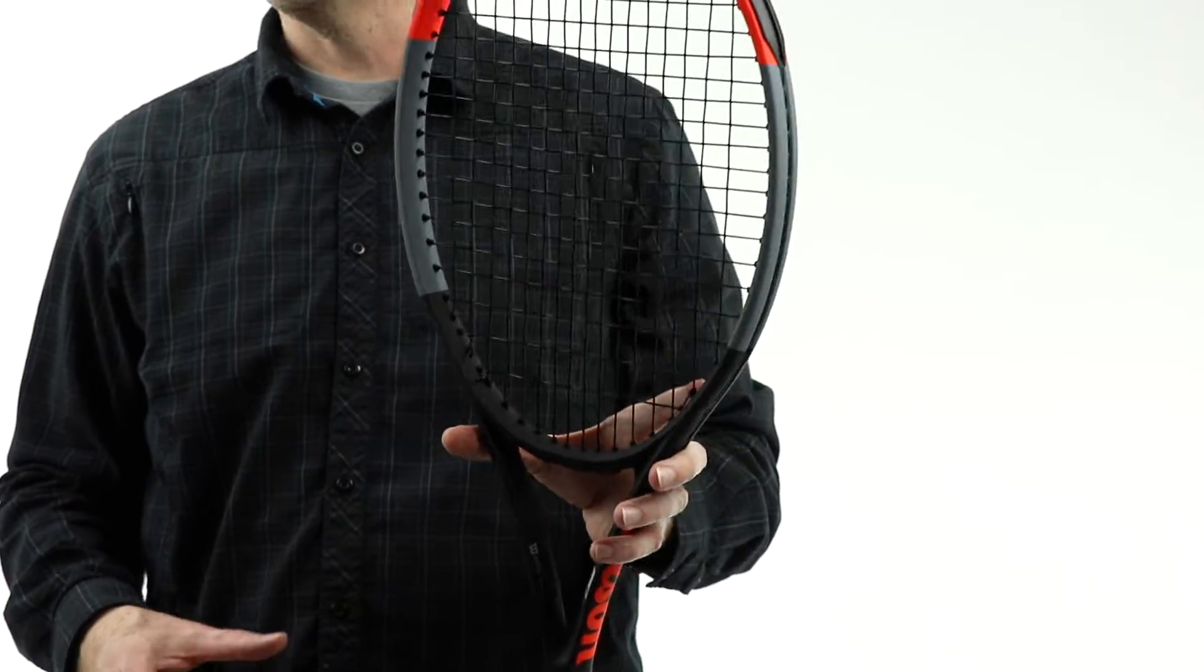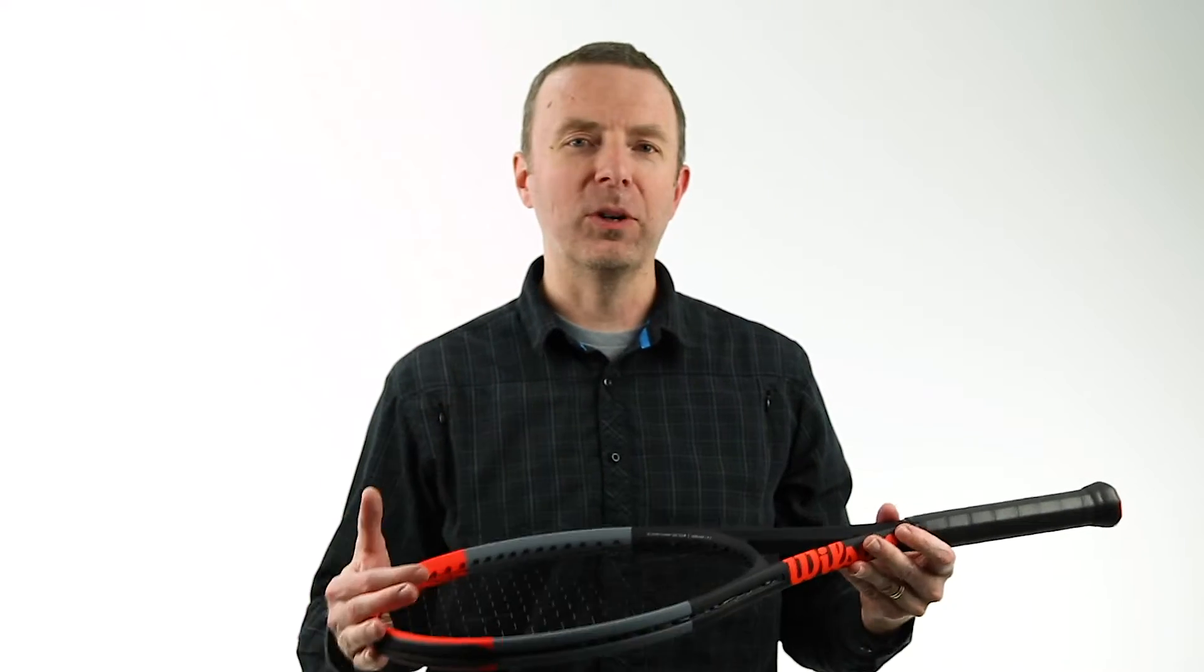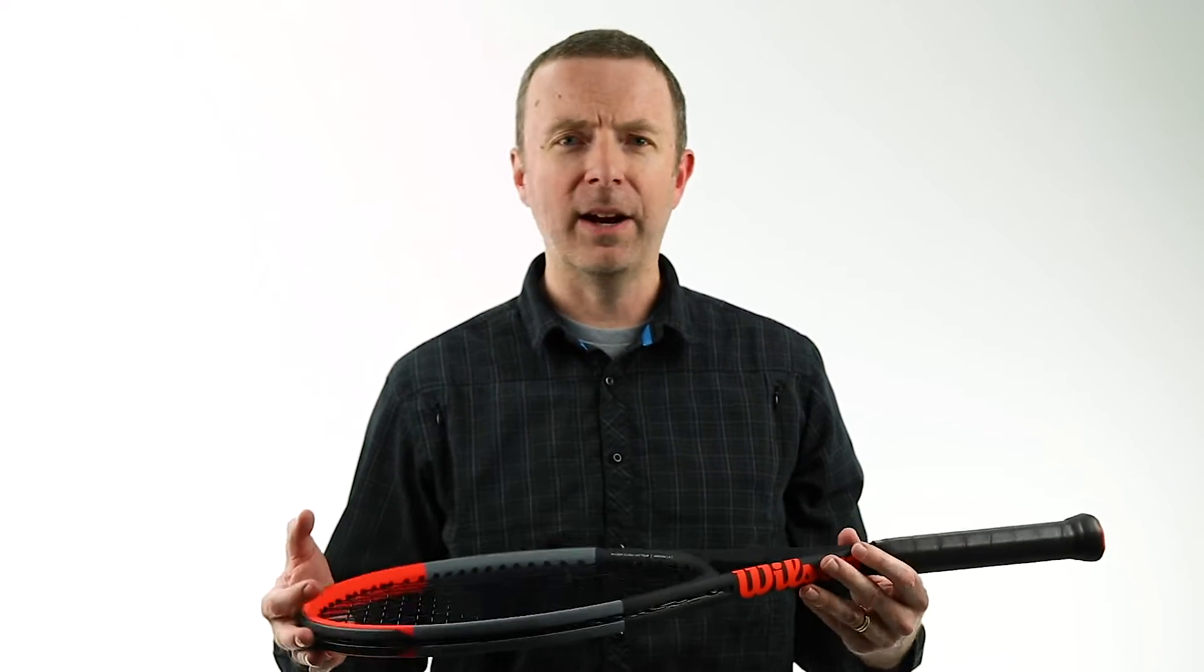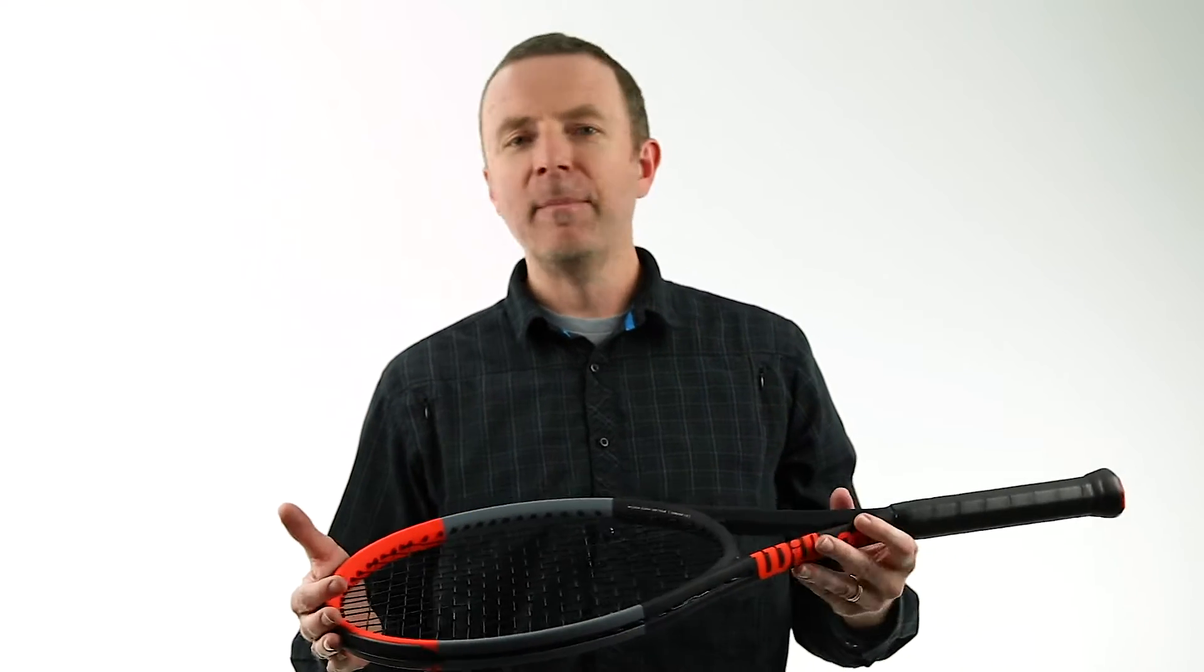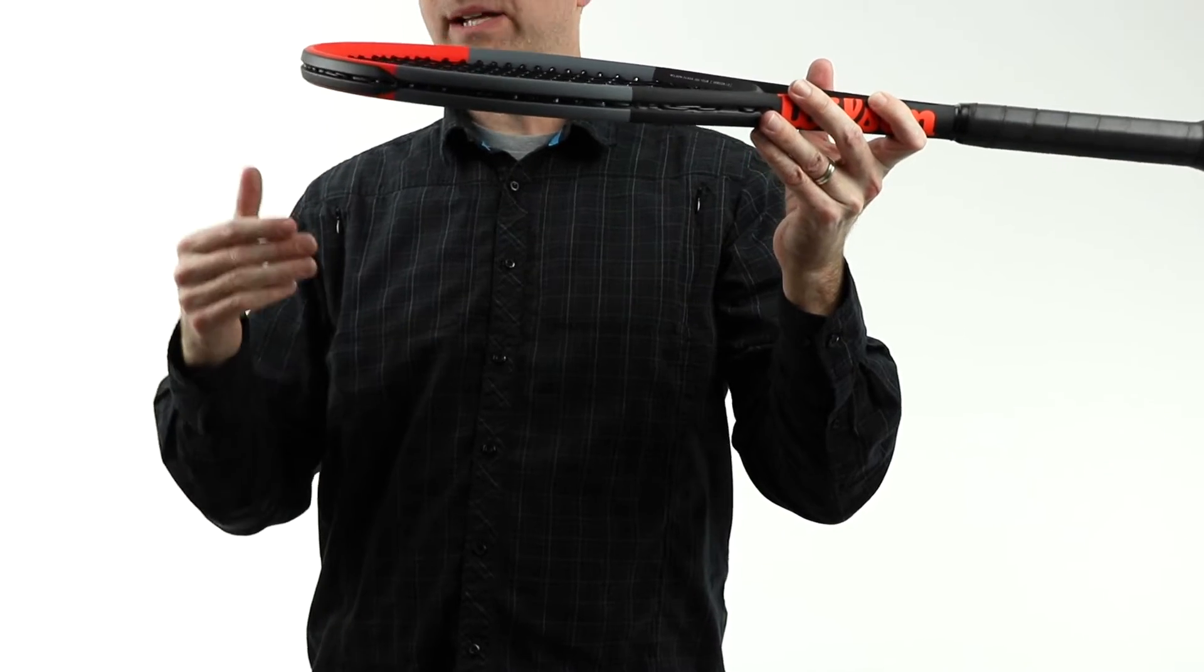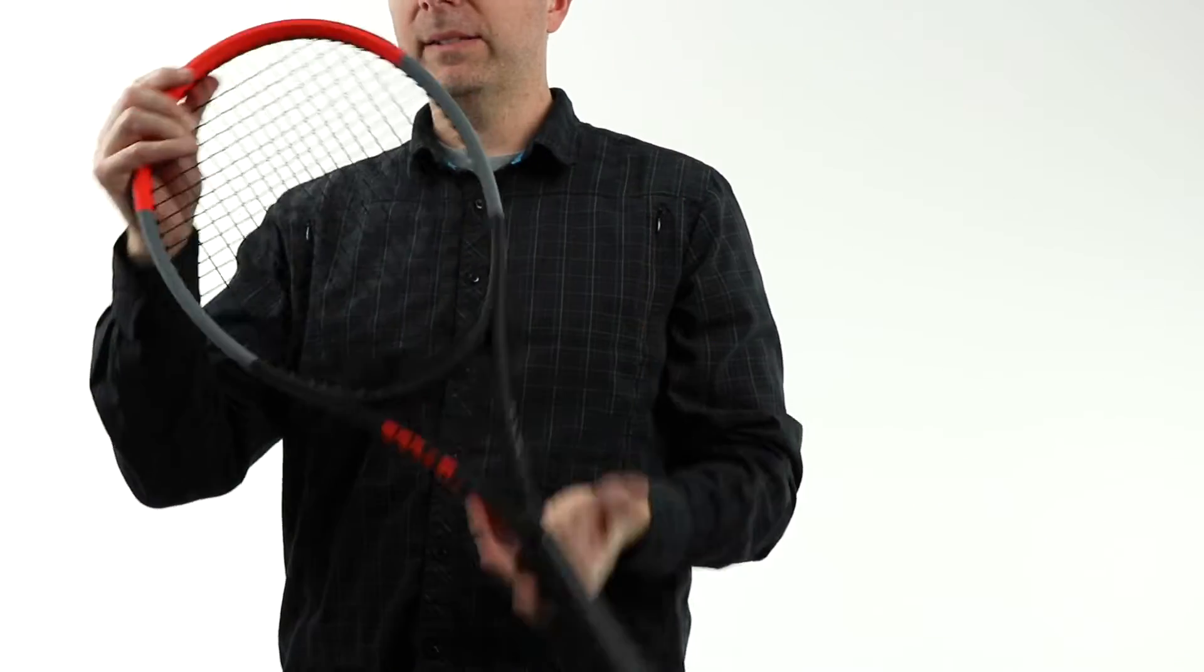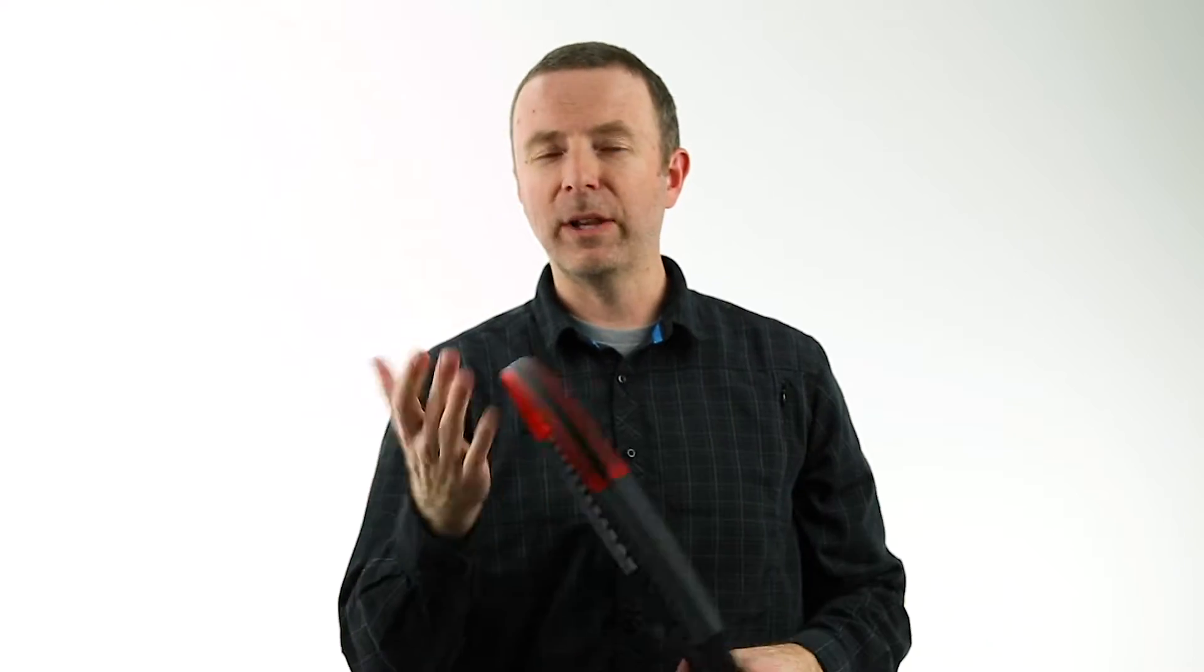So the idea is that this racket is quite flexible. Those of you that are familiar with Wilson's stiffness index rating over the years, Pro Staff 6.1, Hyperhammer 5.3. That was a measurement in millimeters of how far the racket bent. And this racket by the same measurement would be 11.2. So it's off the charts in terms of flexibility.